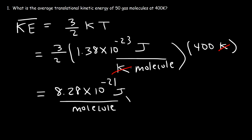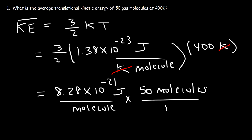In this problem, we have 50 molecules. So we can cancel the unit molecules, and this will give us the final answer, which is 4.14 times 10 to the negative 19 joules.